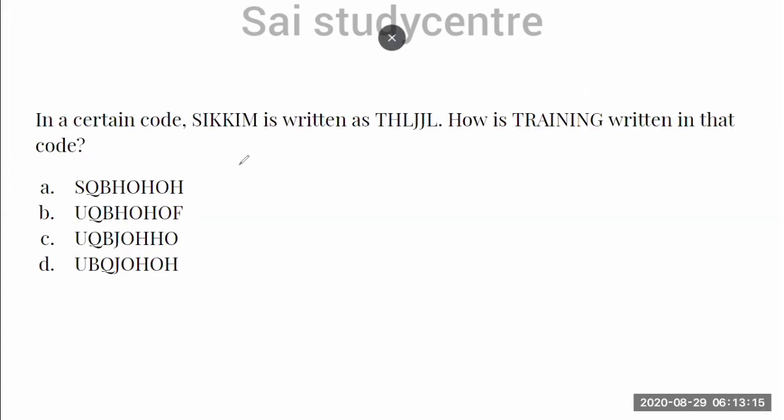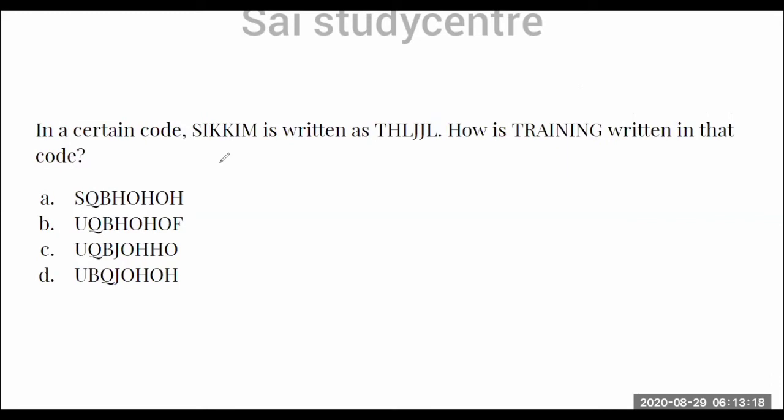In our next example, this is also some type of alphabet. Previously we have seen some alphabet or name related with some numerical. Here one word is related with some other alphabets, like our alphanumeric. We have to crack it. Here also, we can write: SIKIM is written as THLJIL. So I am writing S is written as T, I is written as H, K is written as L. But again, my K is written with some other letter called J, not as L. I is written again as K, and M as L.